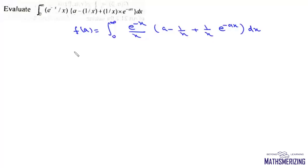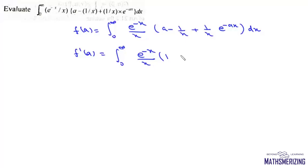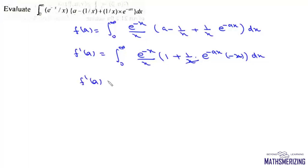We'll differentiate this function with respect to a. We'll write F'(a) as this integral from zero to infinite and now we'll partially differentiate this function with respect to a. So it'll be e to the power minus x upon x — derivative of a will be one, derivative of one upon x is zero — then it'll be one by x, and here will be e to the power minus ax times x into minus x, dx. Now here x and x will cancel. So we'll write F'(a) as this integral from zero to infinite of e to the power minus x upon x, and then one minus e to the power minus ax, dx.